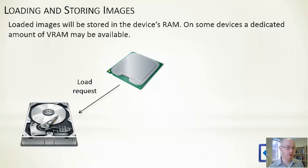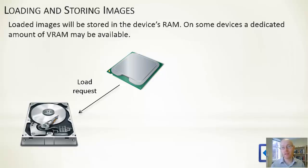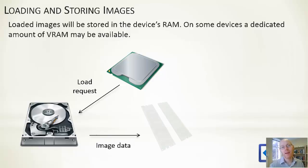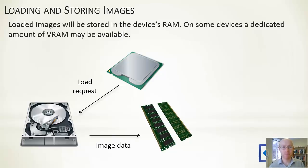Our CPU will fire off a read or load request and we'll pull this in from whatever longer-term storage we have on the device. This could be built-in memory, it could be pulling across a network connection, it could be streaming off a solid-state drive — it doesn't really matter. Generally speaking, it has to be loaded into memory and then it resides in memory, or depending on what we've loaded in, it might be within video RAM as well.